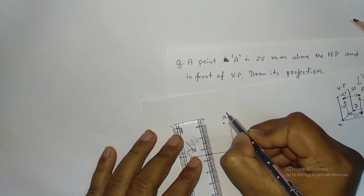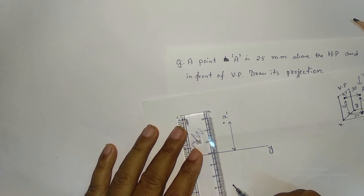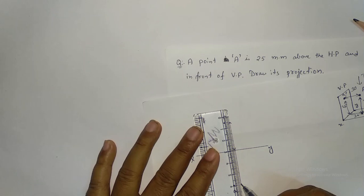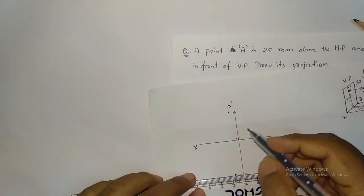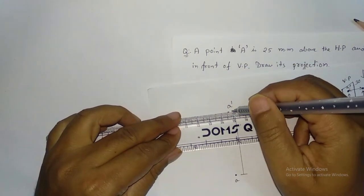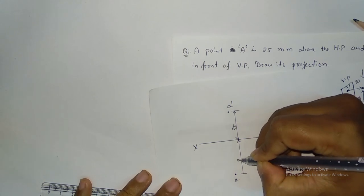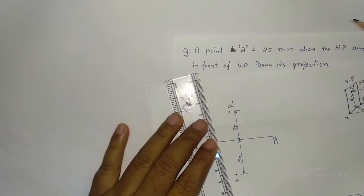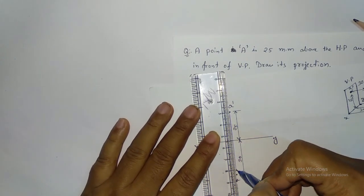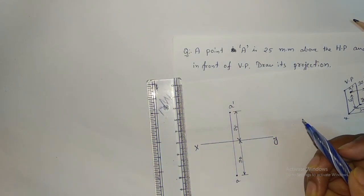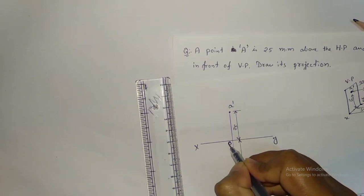The front view is A-dash and the top view is 30mm below XY, so mark point A there. Draw the dimension lines showing 25mm and 30mm. Join these points with a 2H pencil so the projection is in a straight line. This is your A-dash, this is your A, and the intersection point is O.